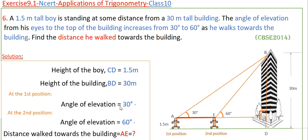At the first position the angle of elevation is equal to 30 degrees, and at the second position the angle of elevation is equal to 60 degrees. We have to find the distance he walked towards the building — that is the distance AE, from the first position to the second position. There are two triangles: triangle ABC and triangle BEC. These two triangles are right triangles.